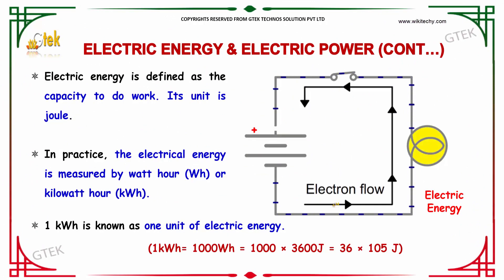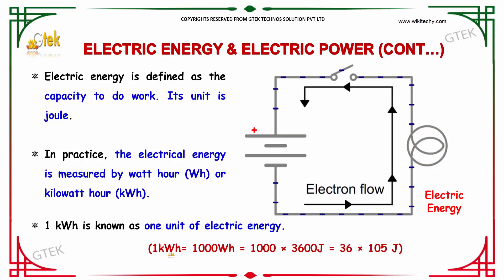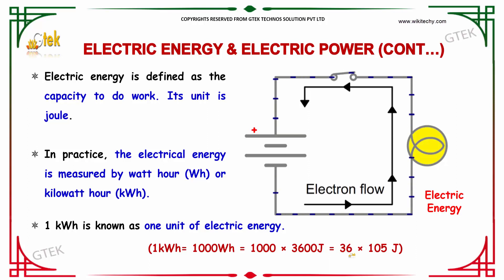Electrical energy is defined as the capacity to do work. Its unit is the joule. In practice, electrical energy is measured in watt-hour or kilowatt-hour. One kilowatt-hour is known as one unit of electric energy. One kilowatt-hour equals 1,000 watt-hours, which is 1,000 times 3,600 joules, giving 36 times 10⁵ joules.